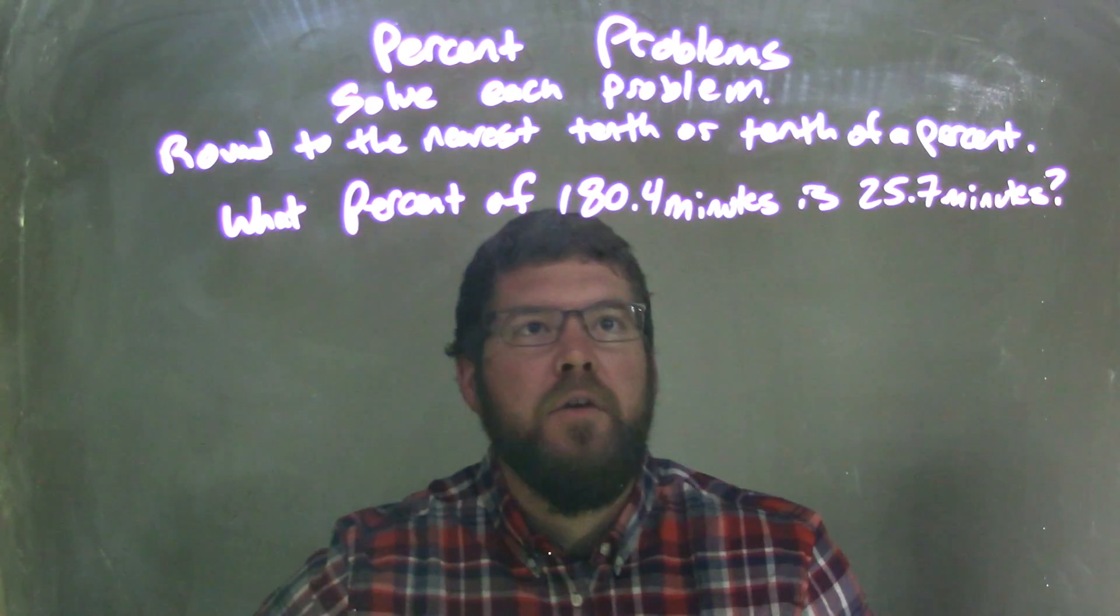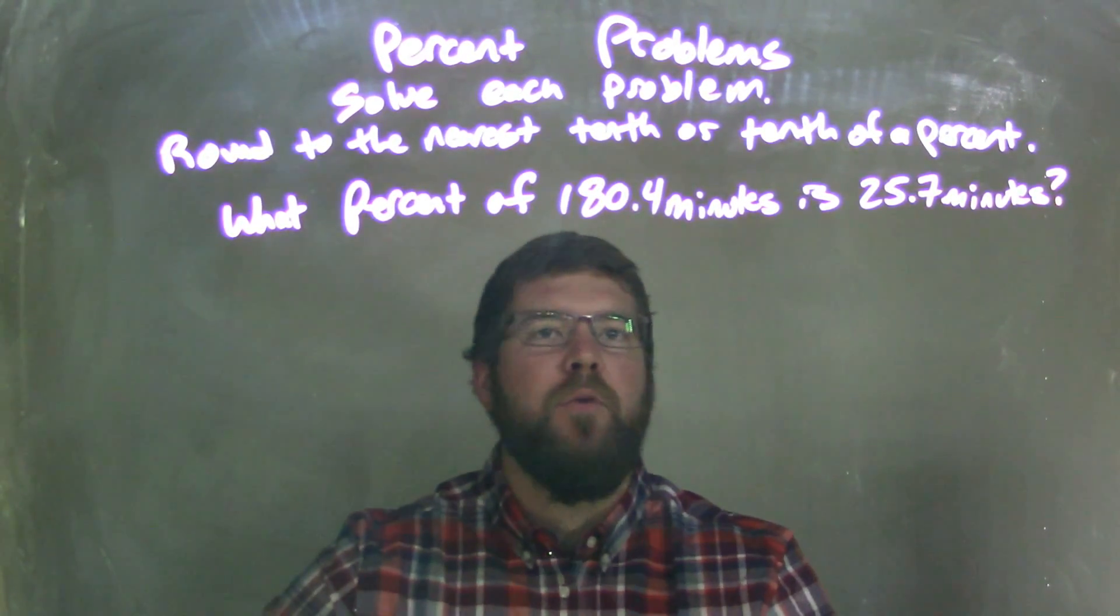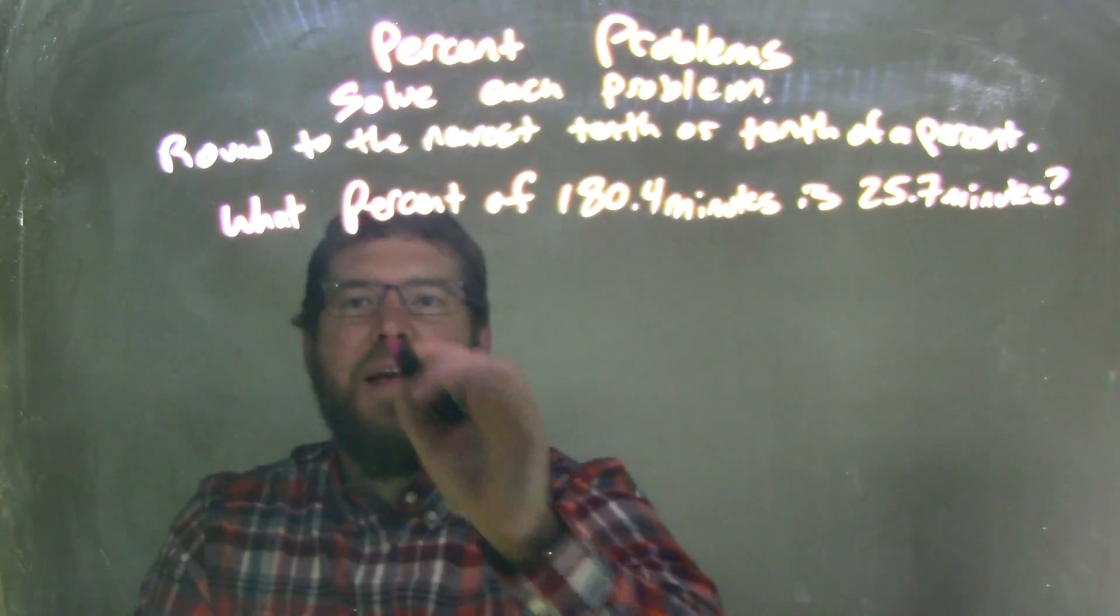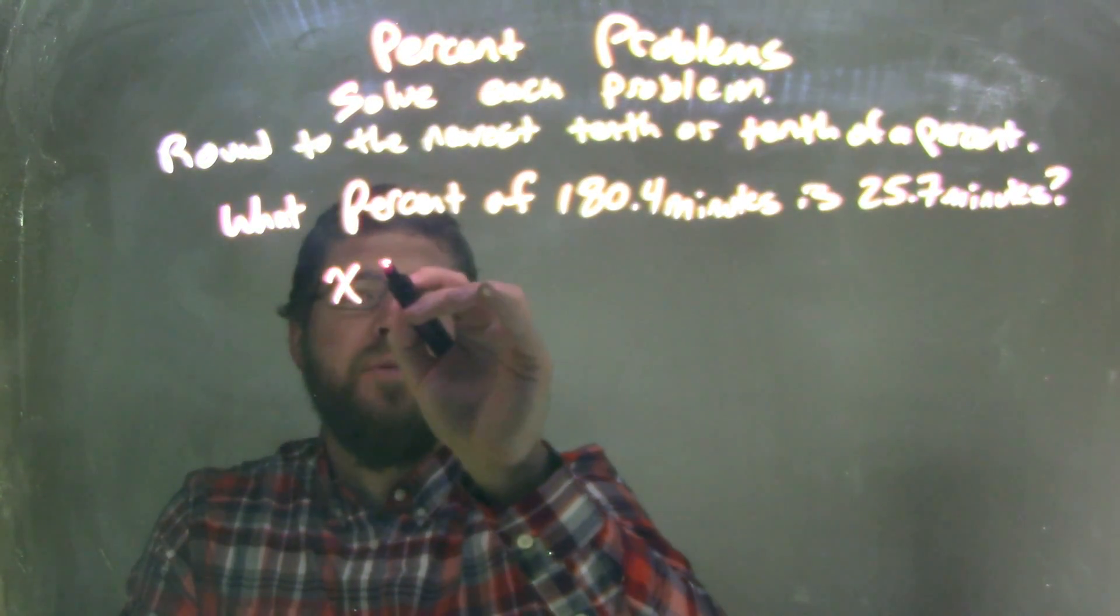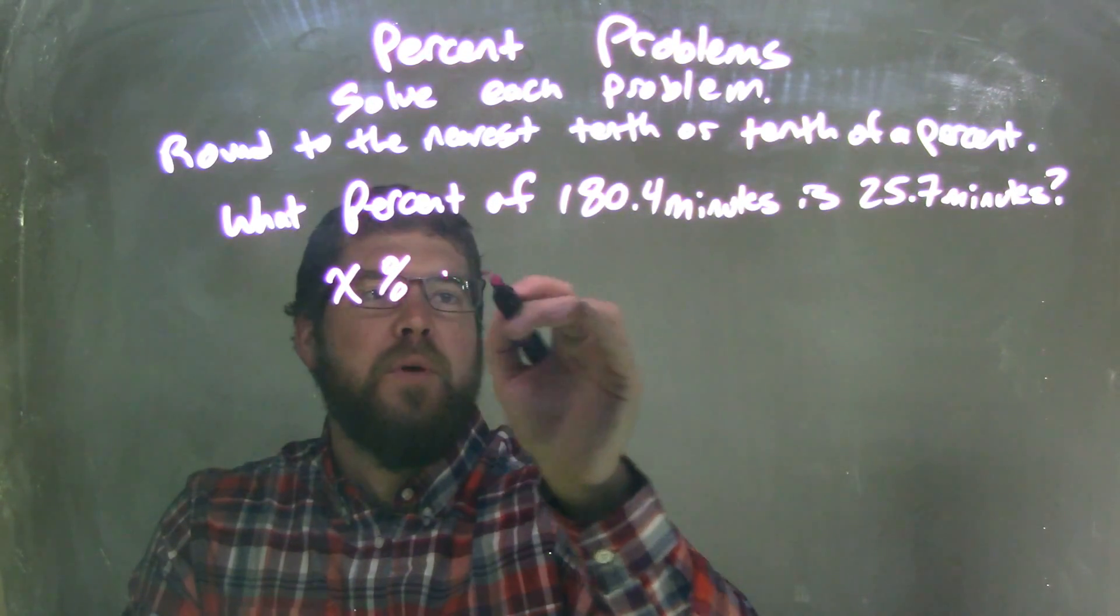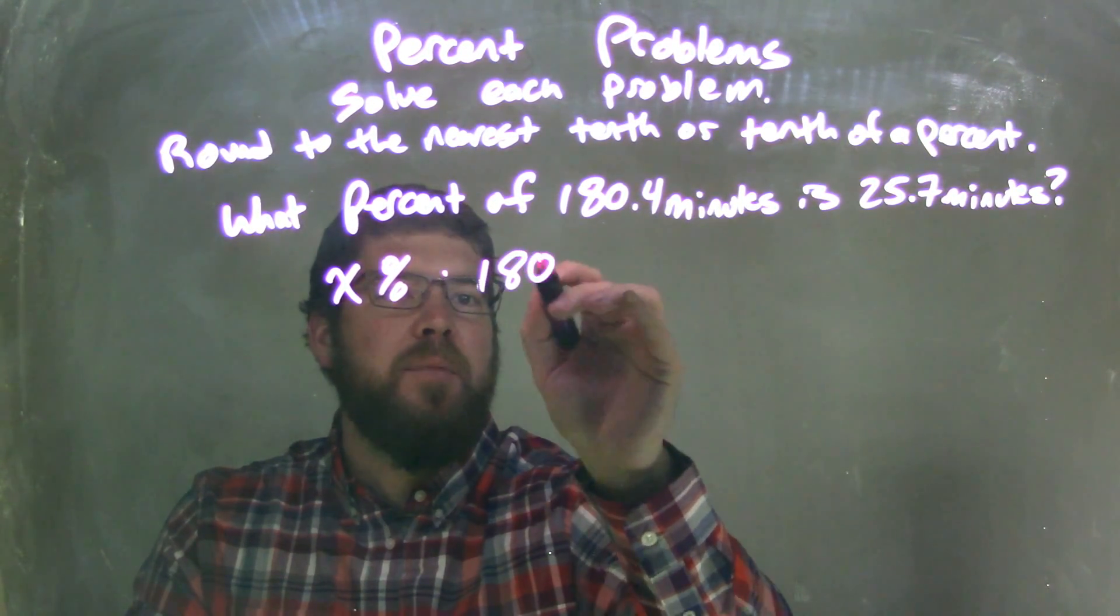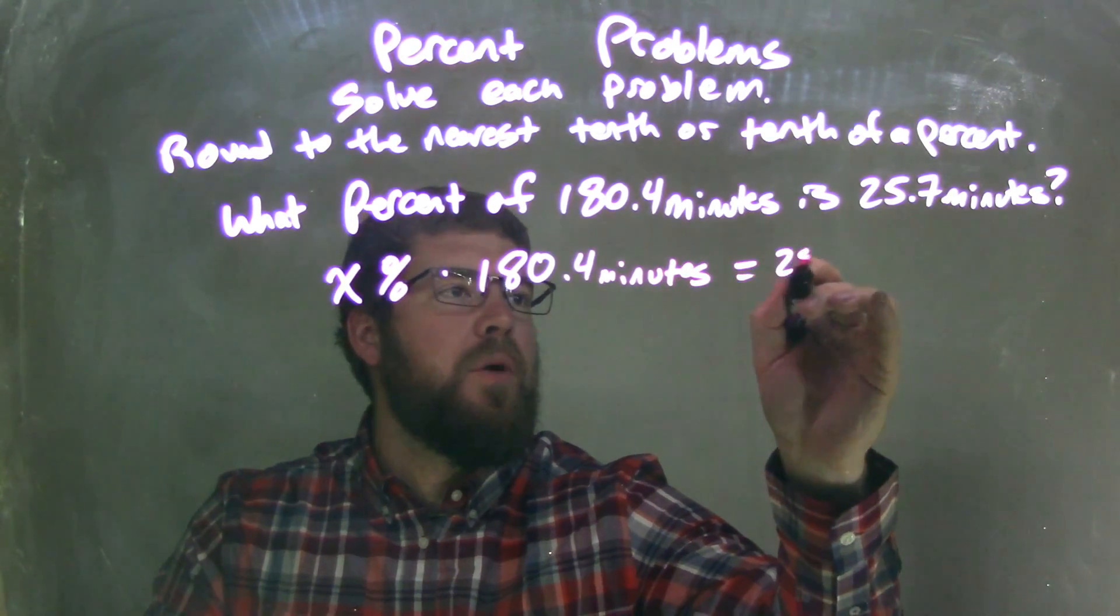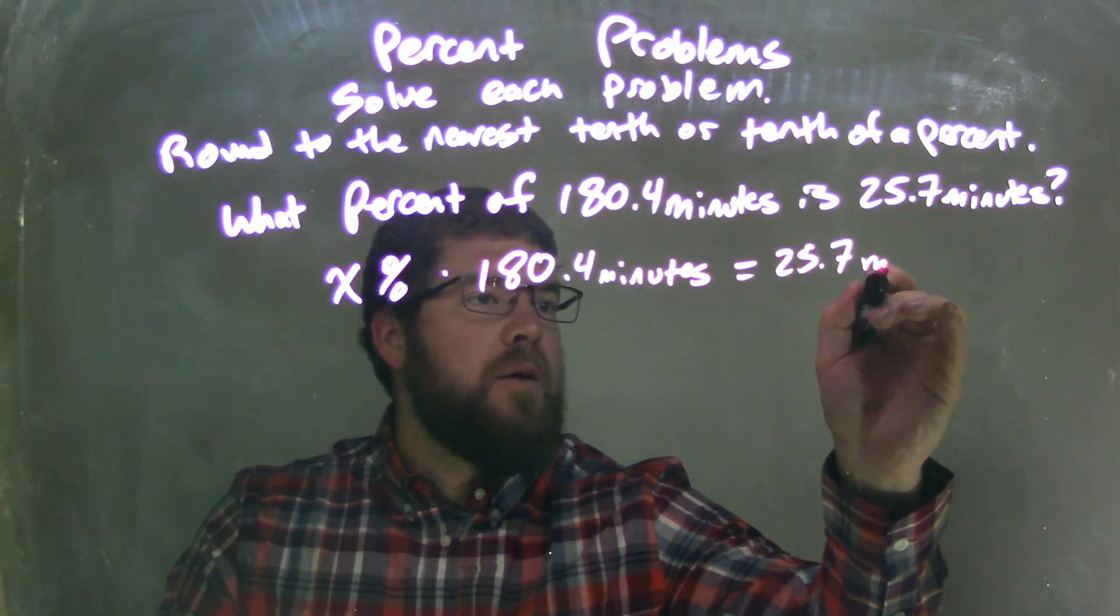What percent of 180.4 minutes is 25.7 minutes? So let's write this as an equation. x percent of, multiplication, 180.4 minutes is, equal sign, 25.7 minutes.